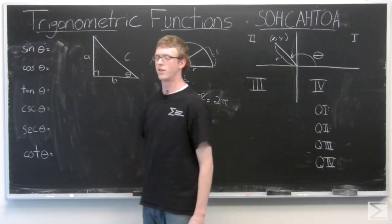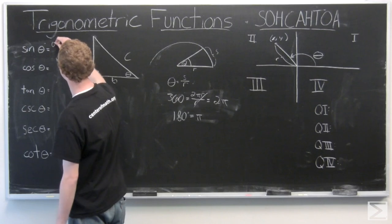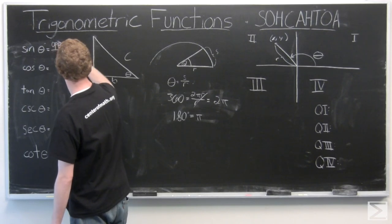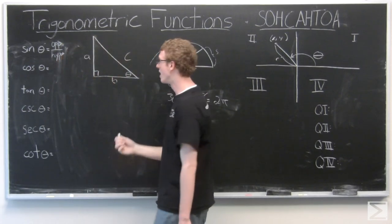SOHCAHTOA, they're all abbreviations. So the first trig function we have is sine, that's the S in SOHCAHTOA, and OH is opposite over hypotenuse. And in this triangle, that's A over C.